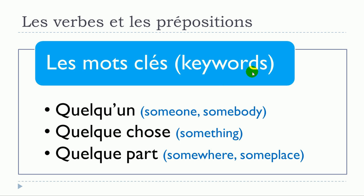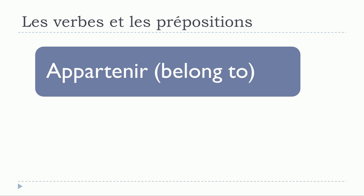The first keyword is quelqu'un — someone, somebody. Then quelque chose — something. And then quelque part — somewhere, someplace. These will be quite useful. The first verb that we will see together is appartenir.